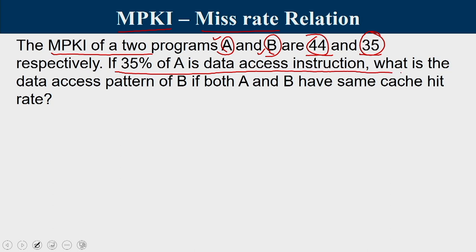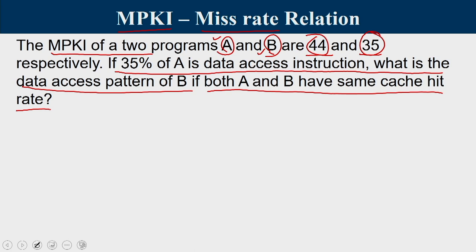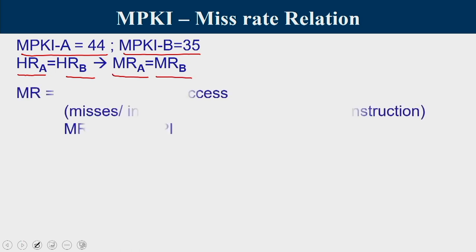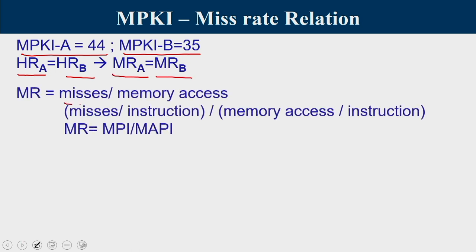If 35% of A's instructions are data access instructions, and both A and B have the same cache hit rate, find B's data access pattern. Since hit rate is the same, miss rate is also the same for A and B. Miss rate is defined as misses per instruction divided by memory access per instruction — MPI divided by MAPI.